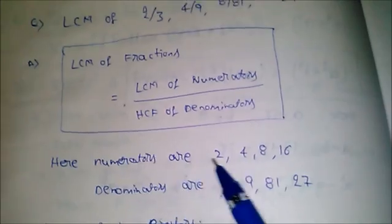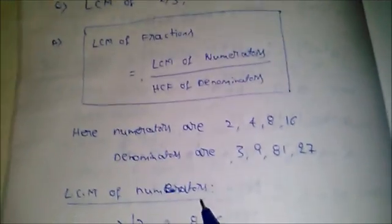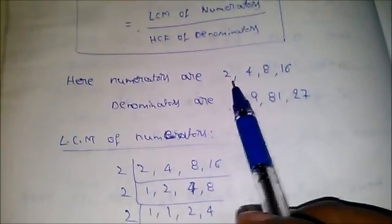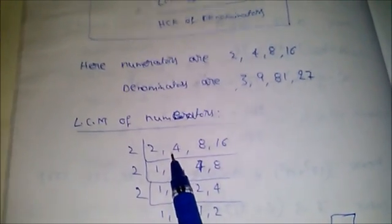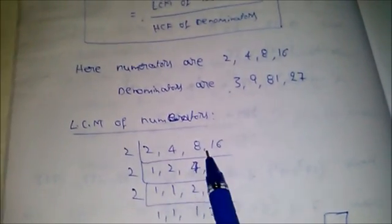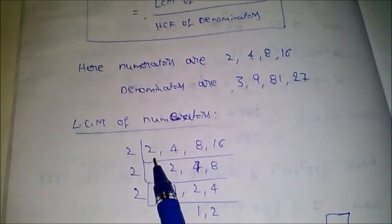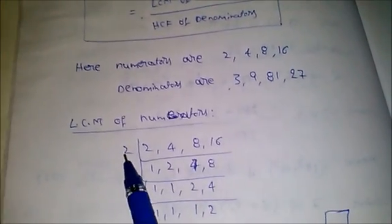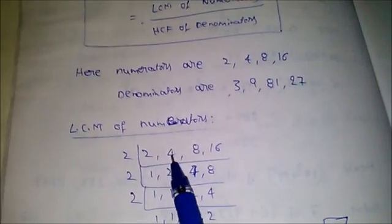So consider the numerator values and start finding the LCM. Take 2, 4, 8, 16. If we can divide any two or more values with the least prime number, then divide those values. Here all values can be divided by least prime number 2.